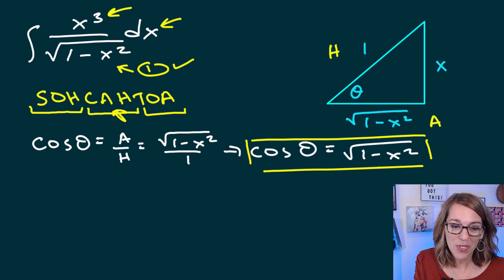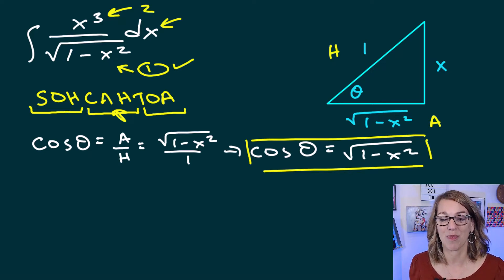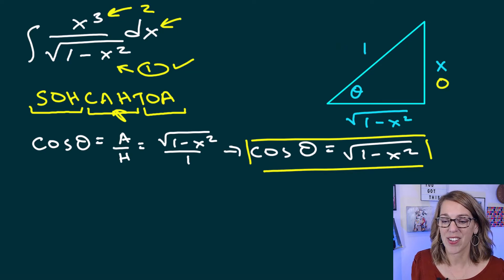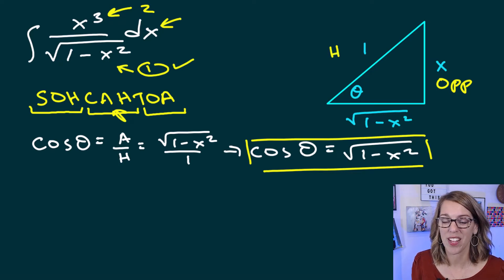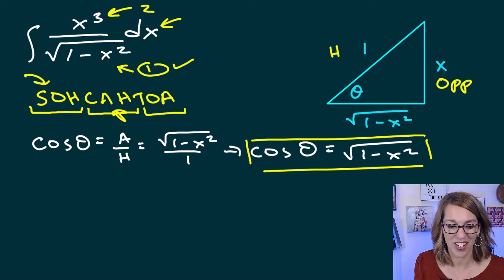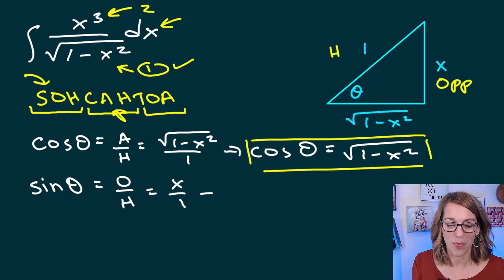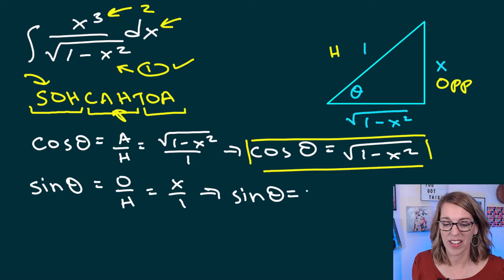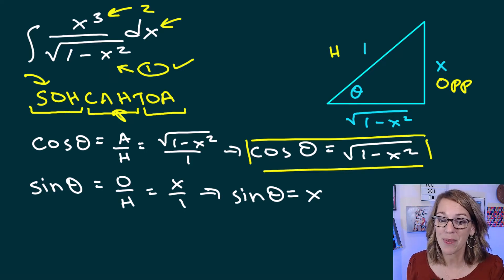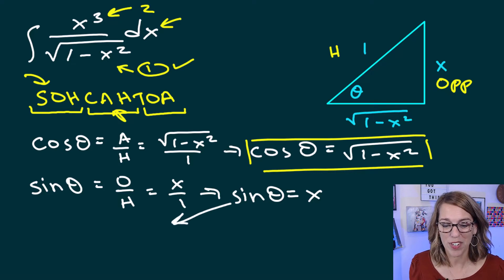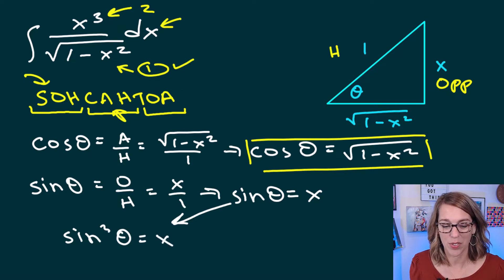Next, I need to handle x cubed. I see x is on the opposite side, and I want to combine it with the hypotenuse 1. Opposite over hypotenuse is sine, so sine(θ) = x/1, meaning sin(θ) = x. That's not quite what I want — I need x cubed — so cubing both sides gives sin³(θ) = x³. That takes care of substitution number two.